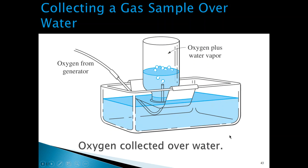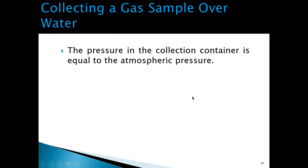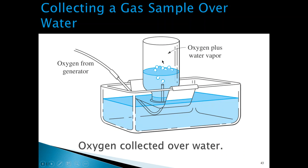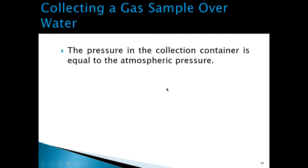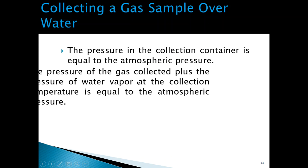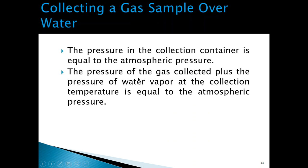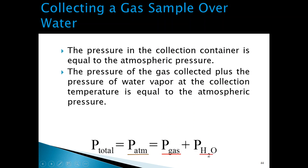You can actually determine the pressure of the gas because what is collected above the water will not only be oxygen, but you'll also have water vapor. Whenever you have a liquid, just above the surface of the liquid you're going to have vapor of that liquid. We normally collect the gas so that the atmospheric pressure equals the pressure of the gas inside the container. The pressure of the gas collected will equal the vapor pressure of water plus the pressure of the gas. If we know the water vapor pressure — which we can find from tables at different temperatures — and we know the atmospheric pressure, we can find the pressure of the gas collected above the water.